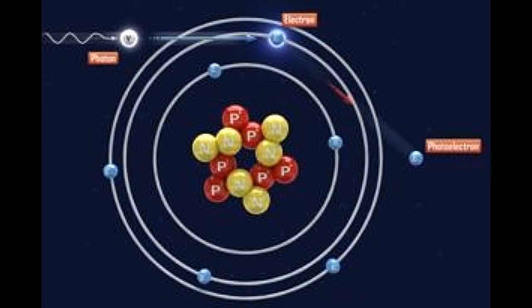De Broglie's matter waves. Experiments like the photoelectric effect demonstrated particle-wave duality of light. If light waves behaved like particles, could matter particles also behave like waves? In 1924 Louis de Broglie, a French physicist, hypothesized the existence of matter waves corresponding to every particle, whose wavelength would be inversely proportional to the momentum of the particle. Lambda matter equals h slash p, where h is the Planck's constant and p is the momentum.